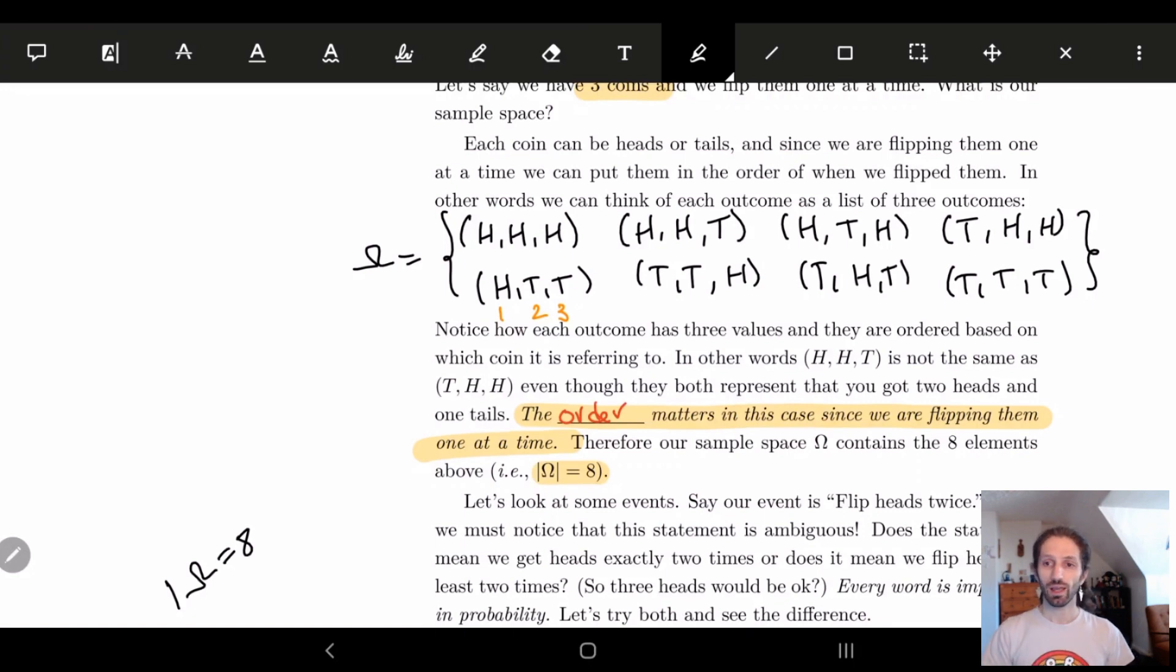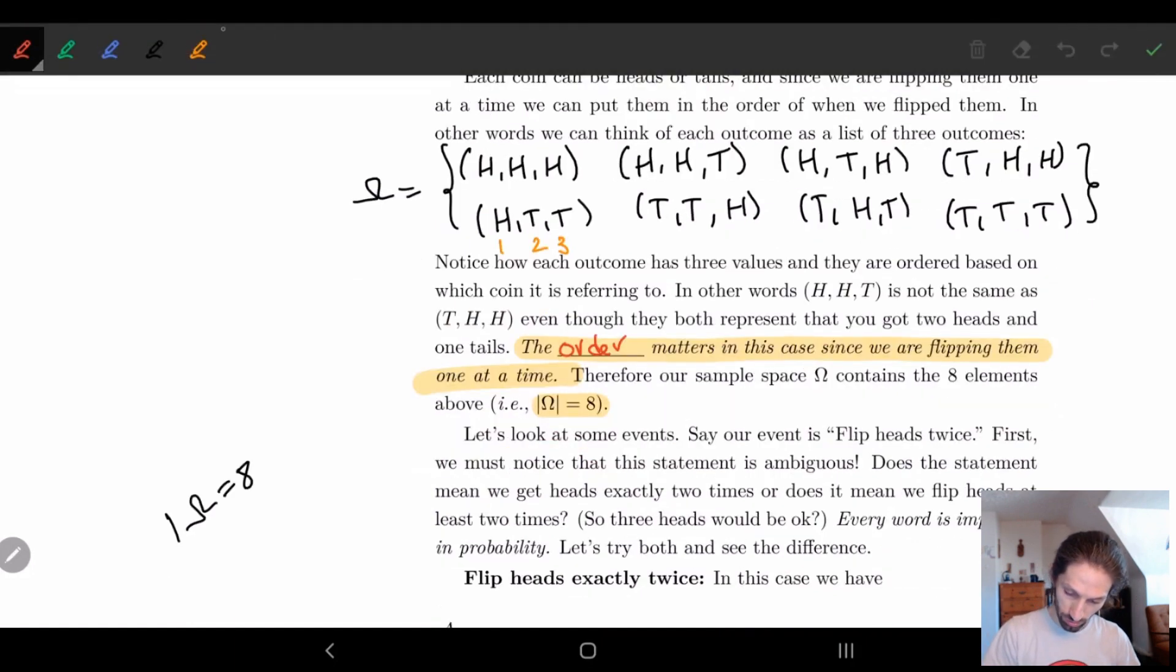So HHT and THH is not the same thing. In the first one, if we're looking at these two, HHT and THH, these two are not the same. In the first one, we're saying that the last coin, the one on the right-hand side, is the tails. And the other one, the one on the left-hand side is the tails. And so these are two totally different events or outcomes.